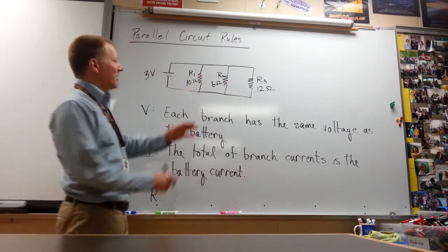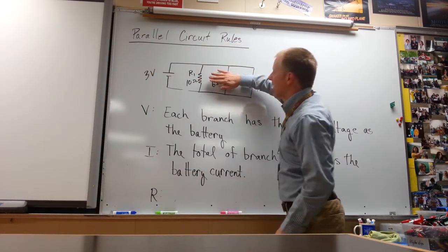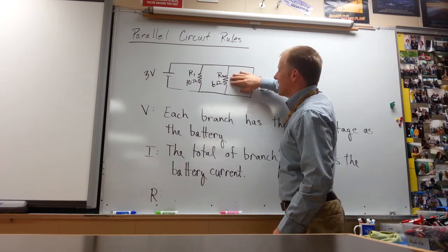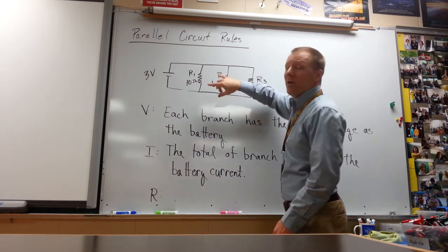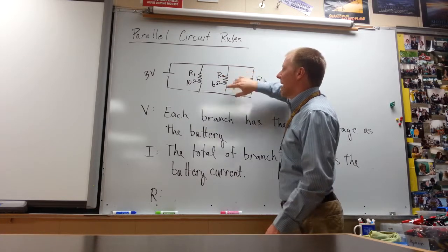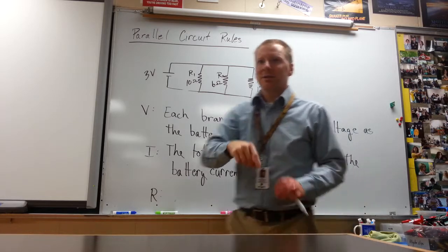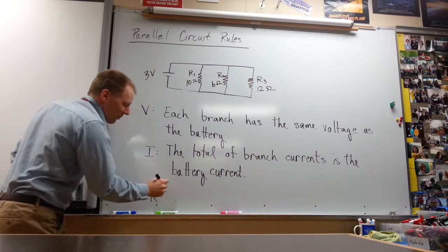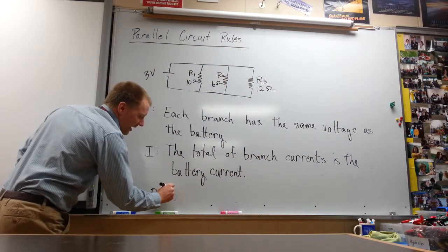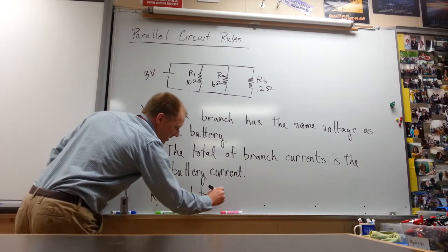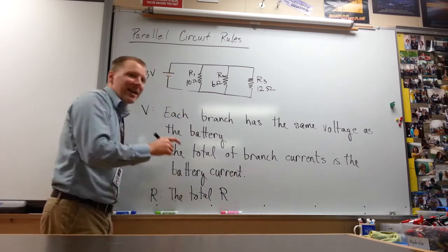So if we started out with just the one resistor, we'd have 10 ohms. Add the 6 ohm, it decreases, as James said, but it actually decreases so that it'll be less than this even. And we'll discuss why in just a moment. But the rule that we need here is that the total resistance is less than any branch.